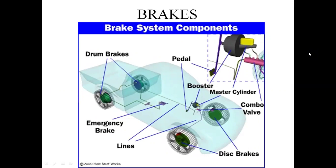This is the basic line diagram of a four-wheeler where the brakes have been applied. There are drum brakes, disc brakes, an emergency brake called the hand brake, and brake lines which are pressure lines carrying high-pressurized fluid, along with the master cylinder and many more components.